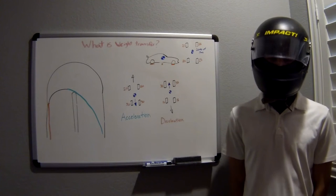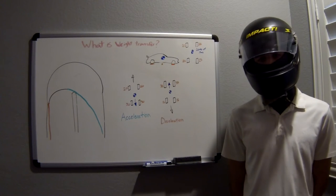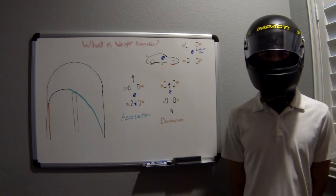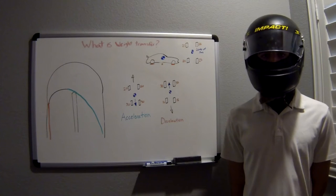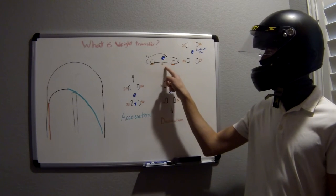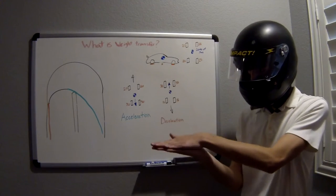Instead, the main force causing weight transfer is in fact inertia. Inertia is simply the fact that matter resists change in direction. The easiest way for me to explain inertia is that the center of mass of any vehicle will be higher than the center of traction. This is because the contact between the tires and the road will always be the lowest point.